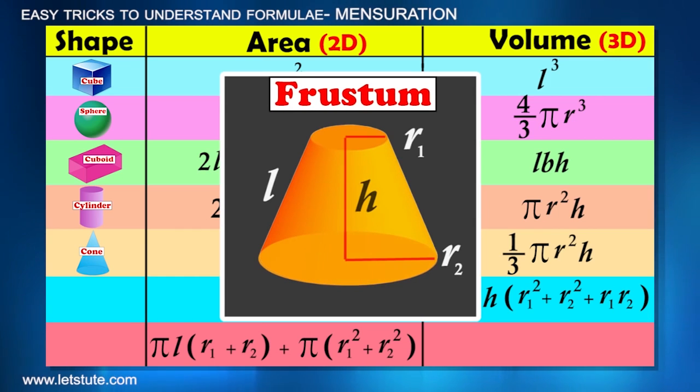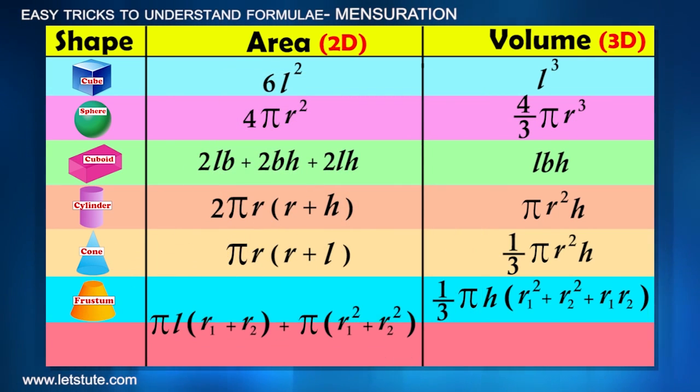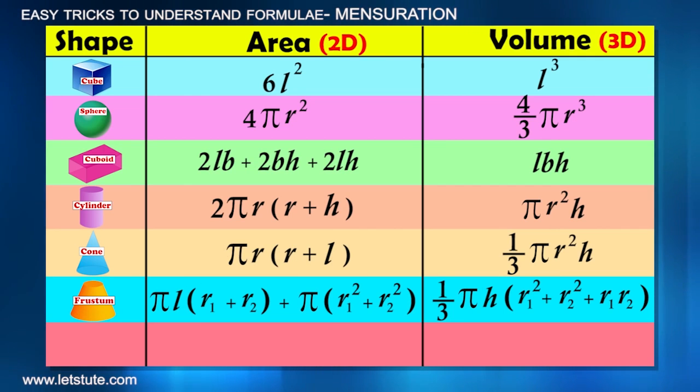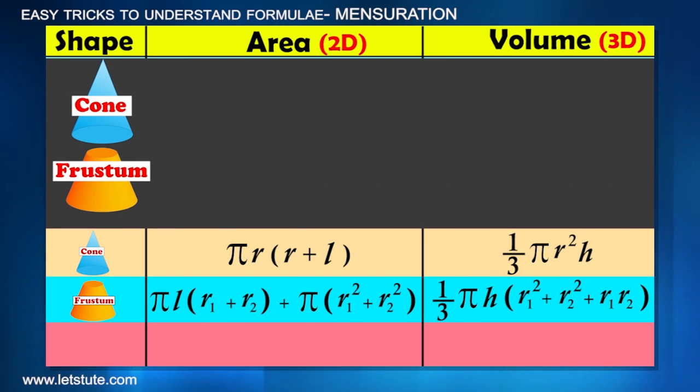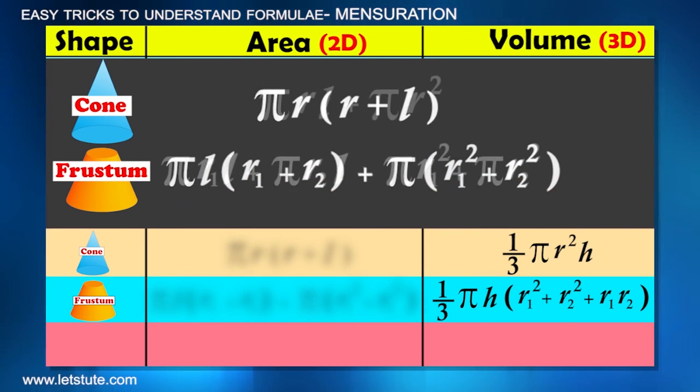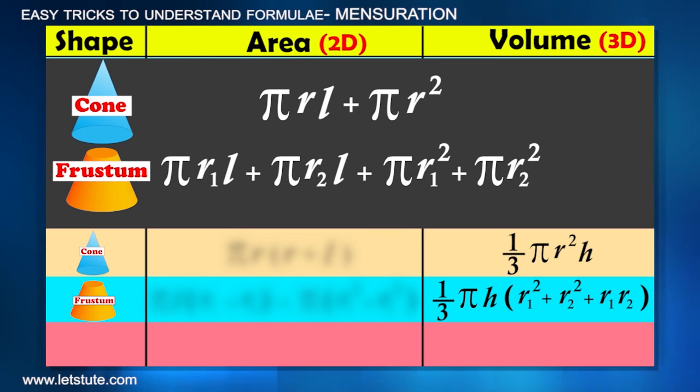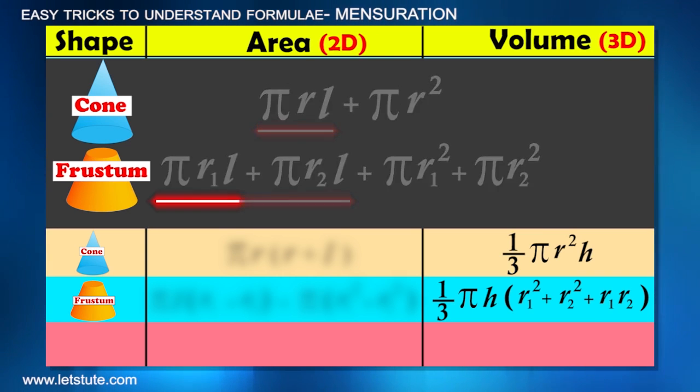And the last shape will get settled by itself. But if we have to write it on our own, then try to relate it with cone. It has 2 circular surfaces, so πr₁² and πr₂². Its lateral surface area is on similar lines as that of cone: πr₁L and πr₂L, which totals up to give this.